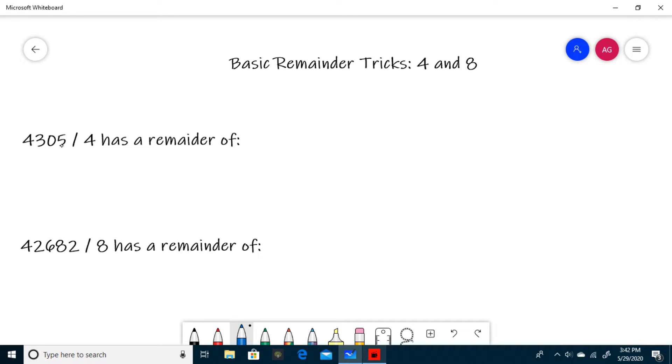You only need to look at the 0 and the 5, and the remainder when 5 is divided by 4 is just 1. So this remainder is 1.